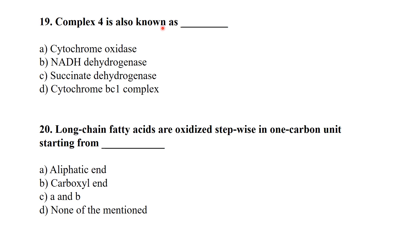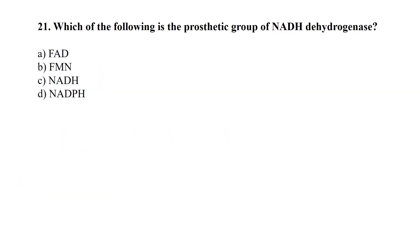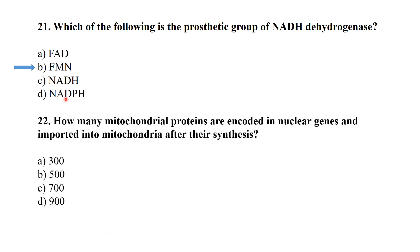Complex IV of the electron transport chain is also known as cytochrome oxidase. Long-chain fatty acids are oxidized stepwise, removing one carbon unit starting from the aliphatic end. Which of the following is the prosthetic group of NADH dehydrogenase? It is FMN — flavin mononucleotide.